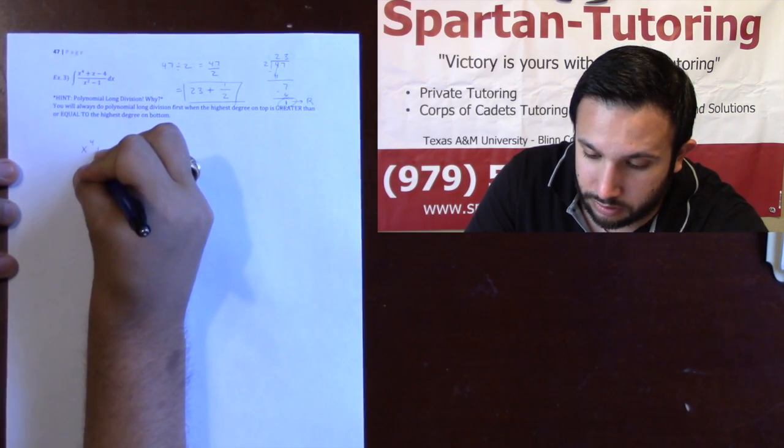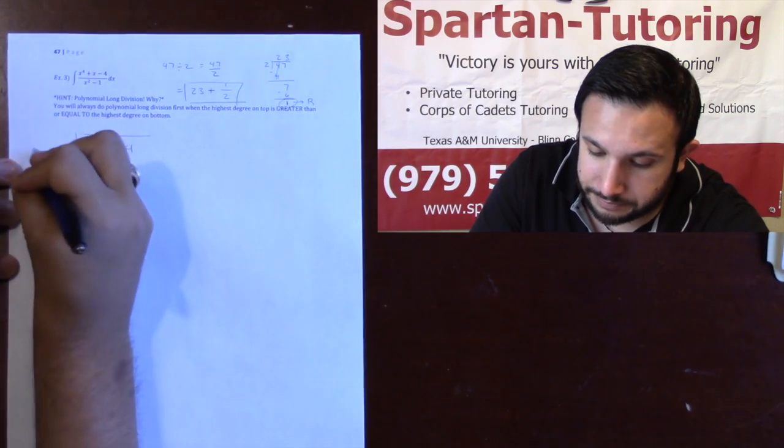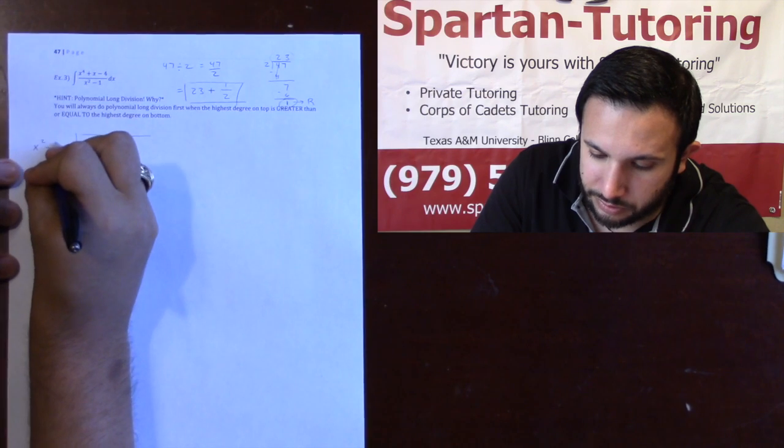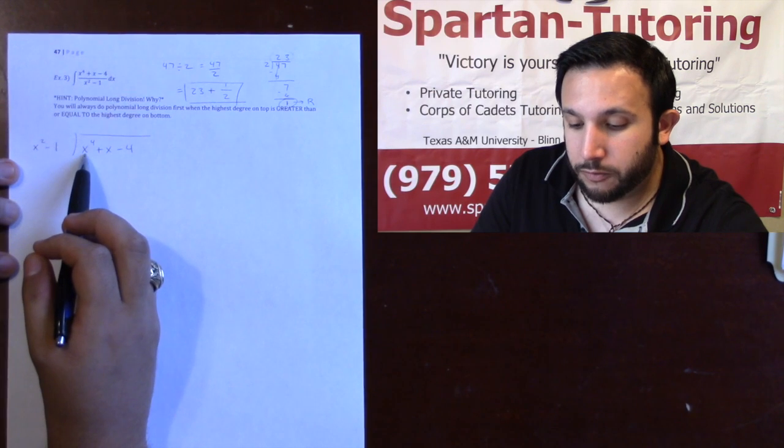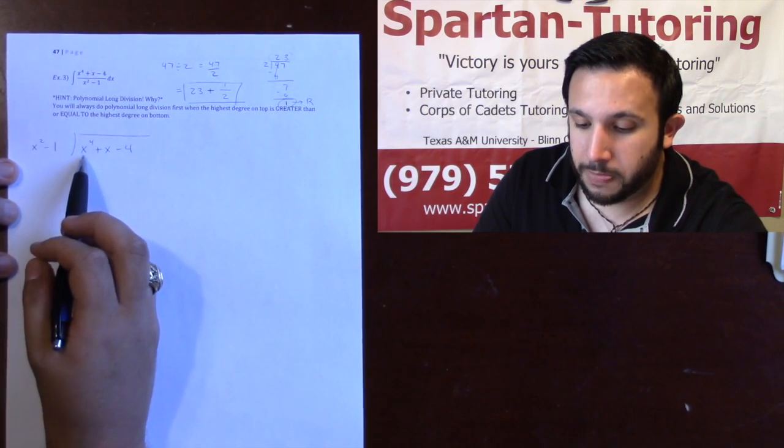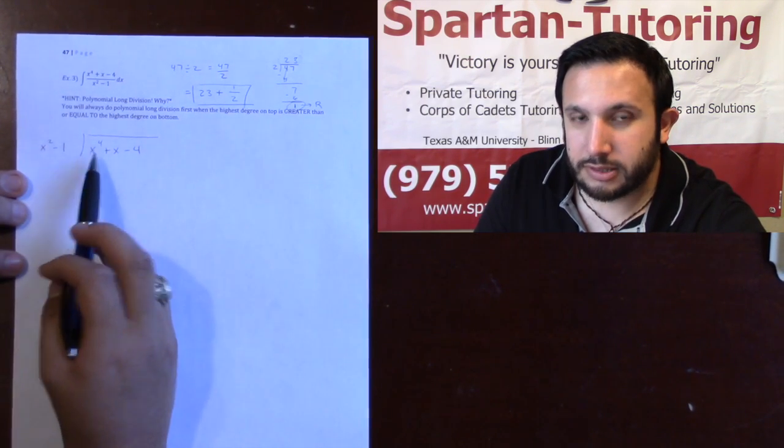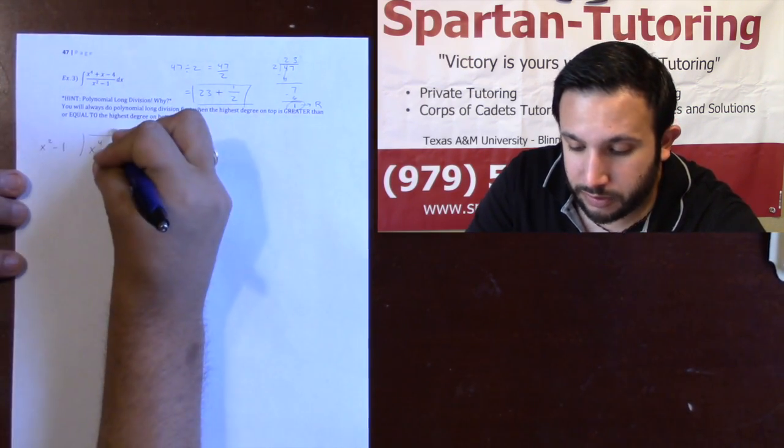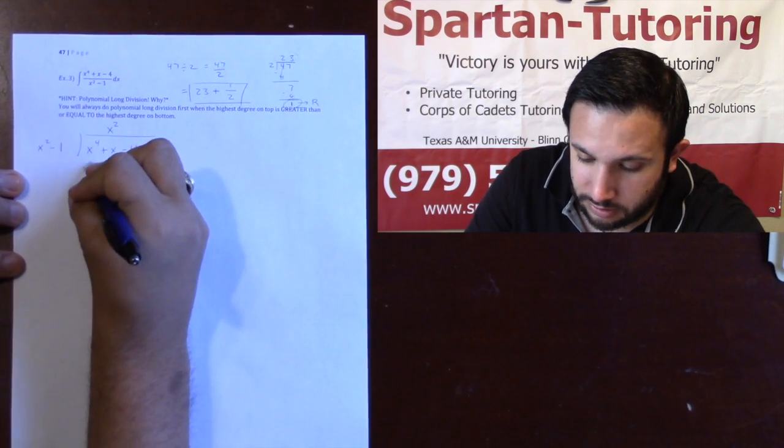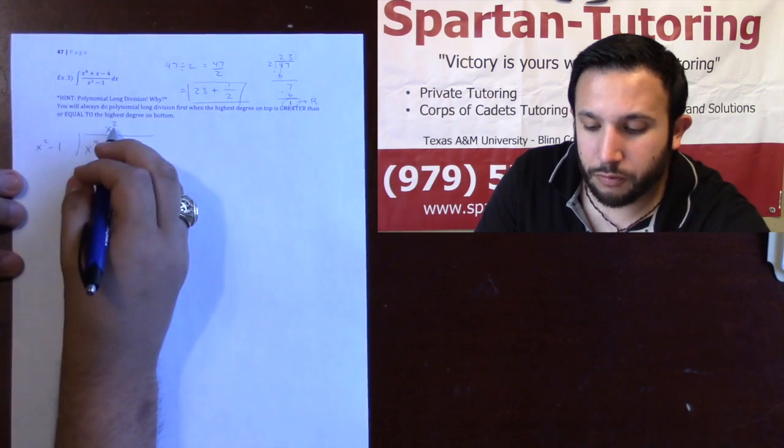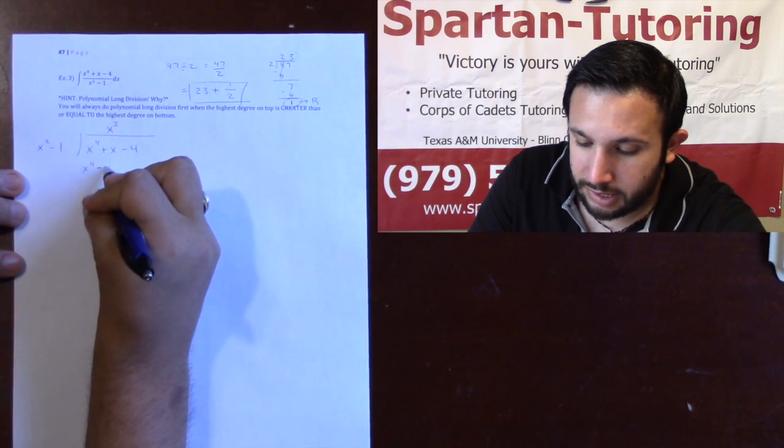So, let's do x to the 4th plus x minus 4, that's on top, and it's going to be divided by x squared minus 1. Okay. So, I'm focusing on this x squared, and I'm first focusing on this x to the 4th. And I need to ask myself, what do I need to multiply x squared by to get x to the 4th? Well, I need to multiply it by an x squared, right? And so, x squared times x squared is x to the 4th. But if you have extra stuff over here, make sure you multiply it into that as well. x squared times a negative 1 is a negative x squared.